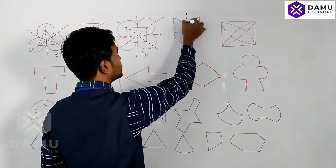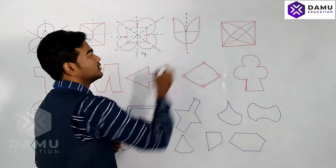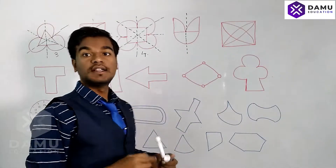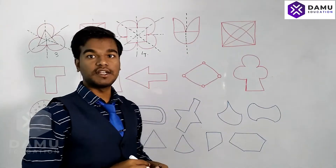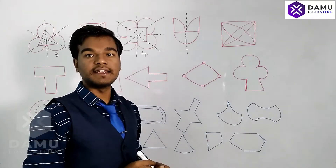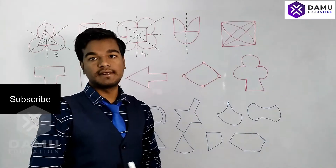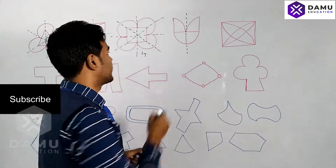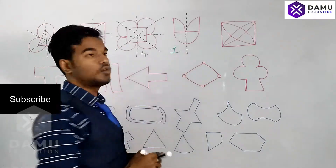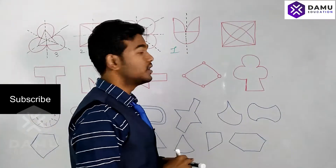For this shape, we can only draw a vertical line — there is no horizontal line of symmetry. If you fold it horizontally, the two parts are different. So only one line of symmetry exists for this shape.